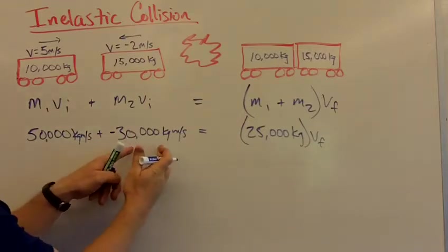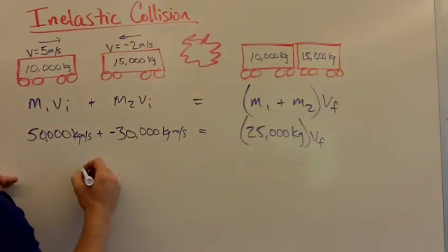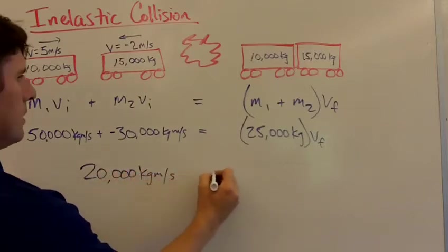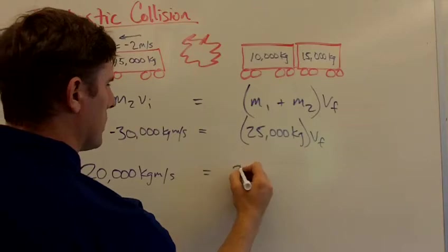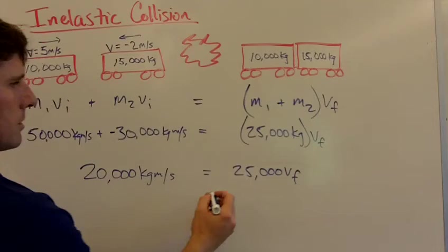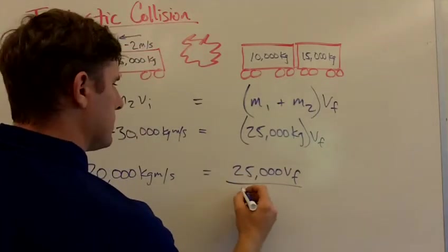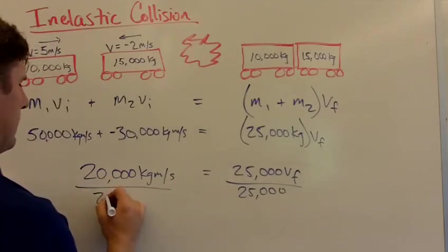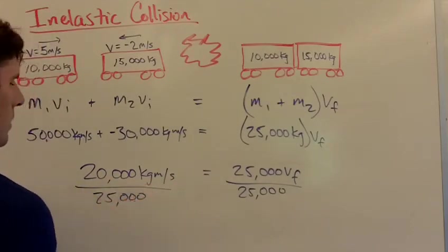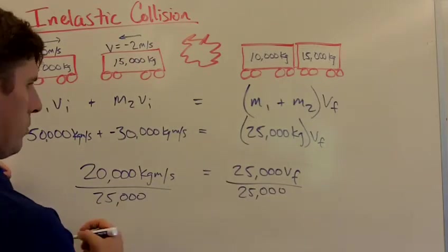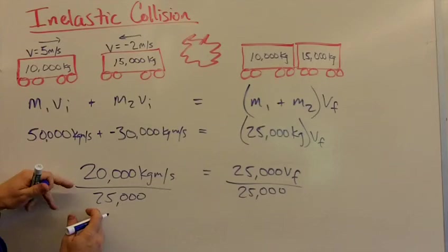So 50,000 plus negative 30,000 gives us 20,000 kilogram meters per second. And that equals 25,000 VF. Now we're going to divide both sides by 25,000. This looks like it's going to be about 0.8—20 over 25, that's just like 4 over 5, which is 0.8. So VF equals 0.8 meters per second.